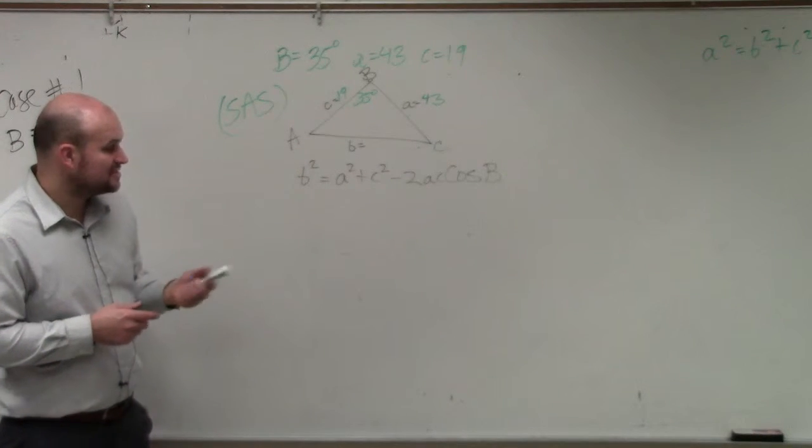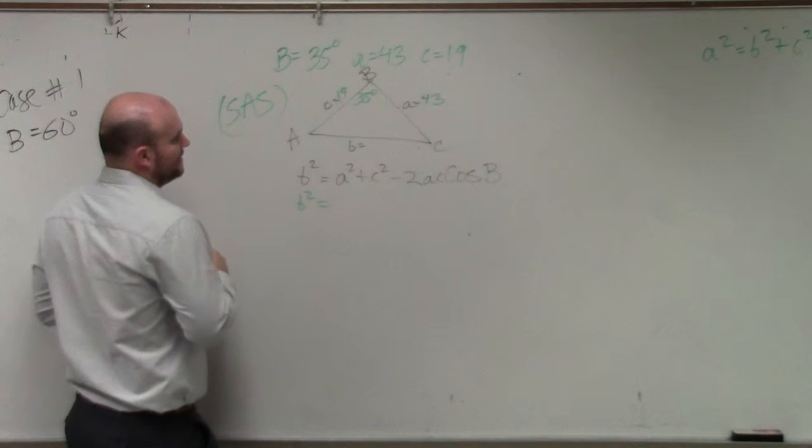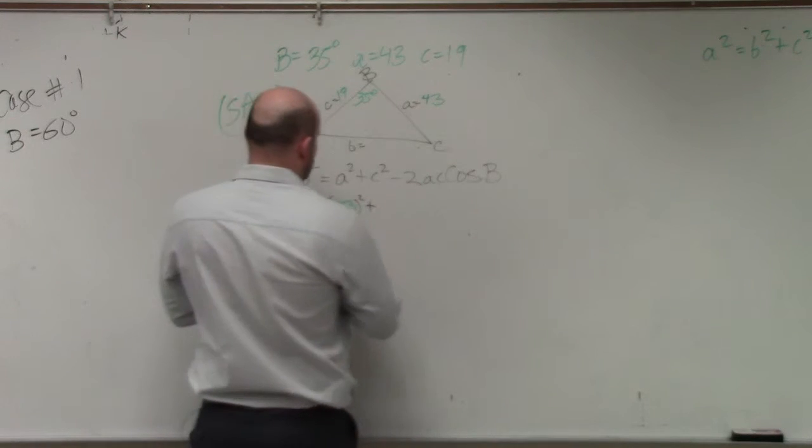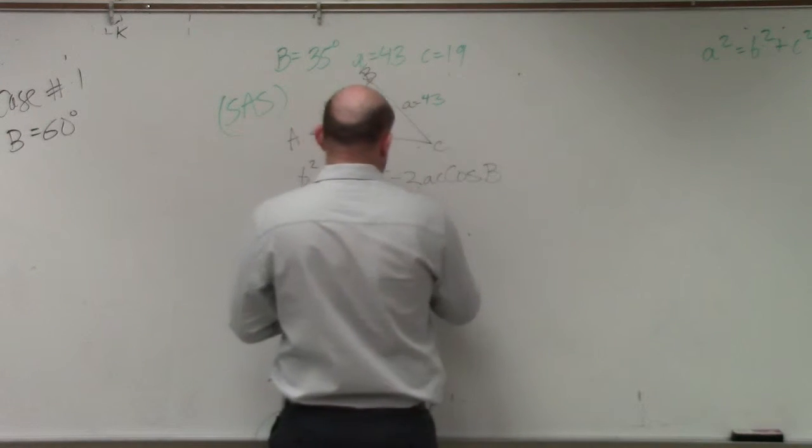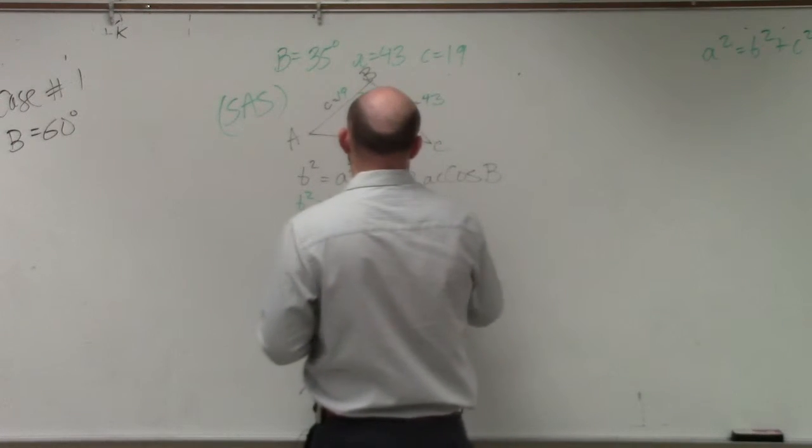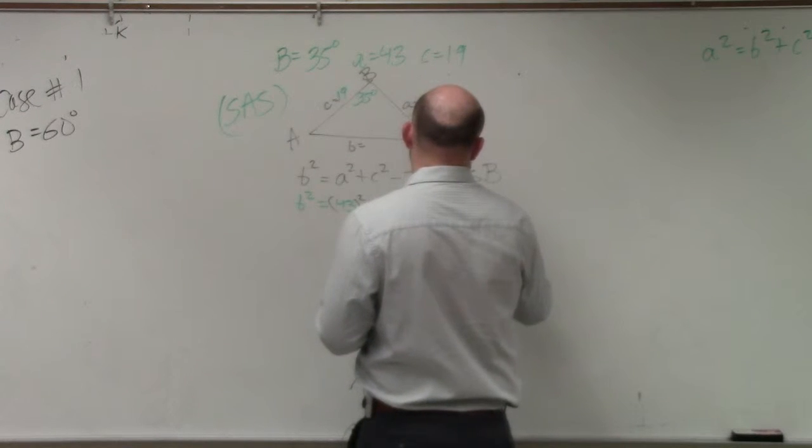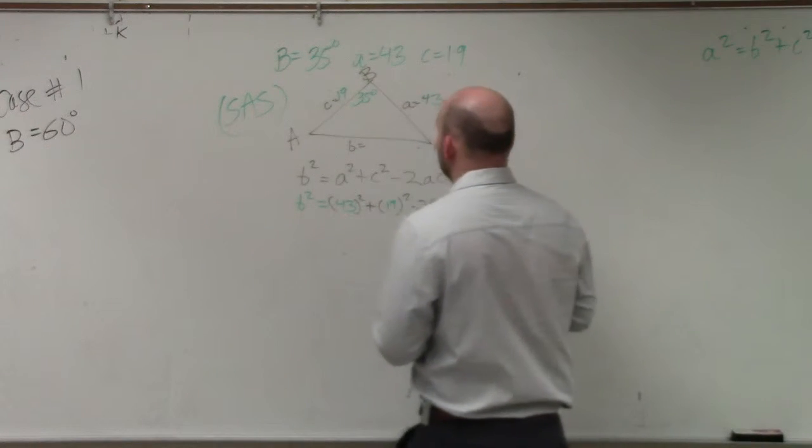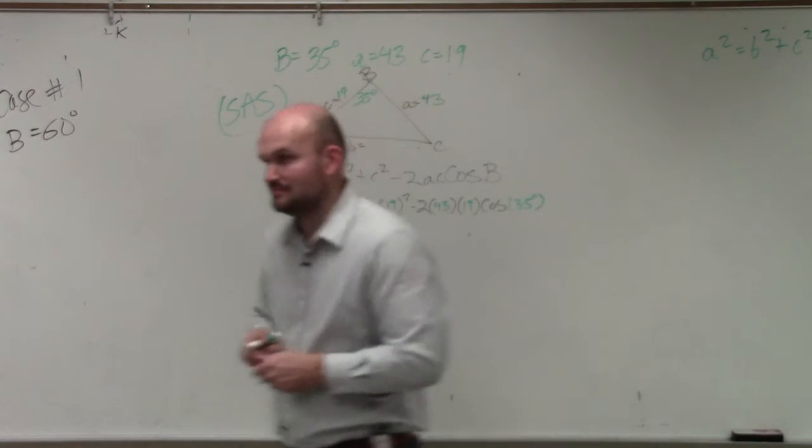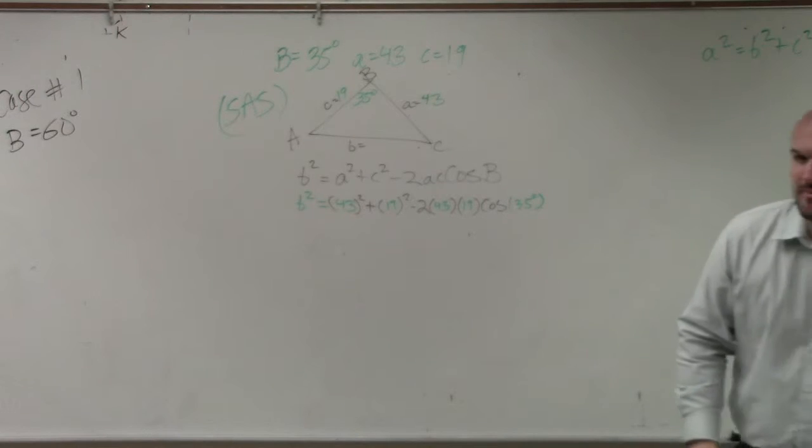So now we have some information. Let's just plug in what we know. We do not know b squared. a we know is 43. This is going to be some big numbers. plus c, which is 19, minus 2 times a, times c, times the cosine of b. So does everybody see how I just plugged everything in? That was it. It's really that hard. That's really the hard part about it, plugging it in.